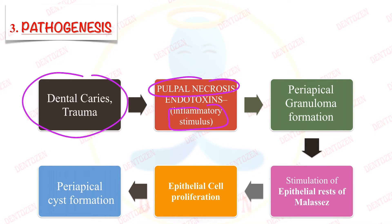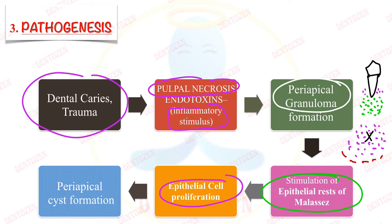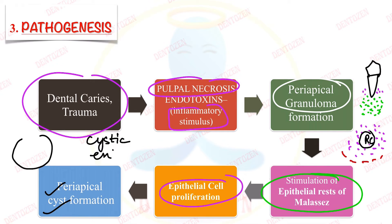In pathogenesis, all these causes leading to pulpal necrosis give an inflammatory stimulus, because of which inflammatory cells like lymphocytes, plasma cells, and macrophages gather in the periapical region and form a mass of cells known as periapical granuloma. The cell rests of Malassez present in the periodontal ligament then get stimulated, start to proliferate, and form a mass of cells that enlarges until the central cells are cut off from blood supply. Those central cells die and form a cavity lined by cell rests of Malassez — this is the radicular or periapical cyst.